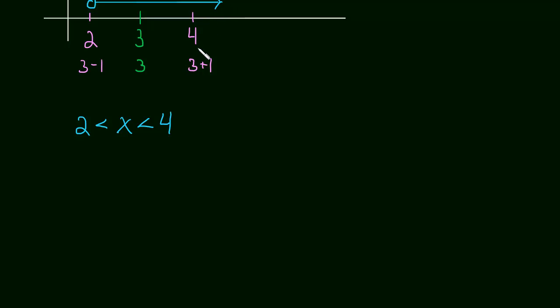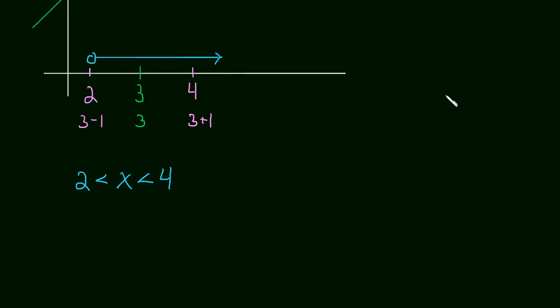A way that we could view this is if it's greater than 2, it's all these values. And if it's less than 4, then it's all these values. But it has to be both at the same time, so it's only what's in between. So it could be anywhere in that interval, between 2 and 4.